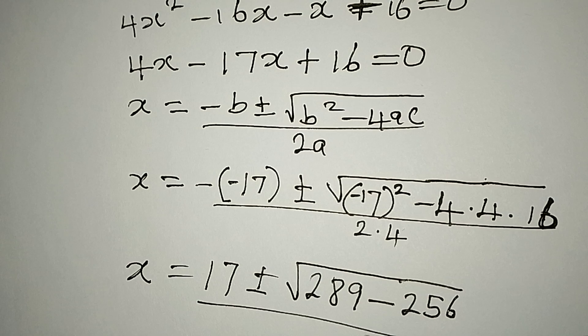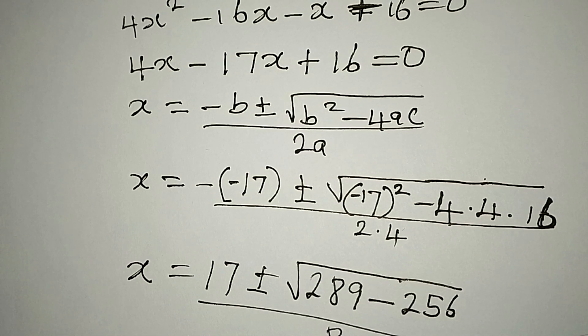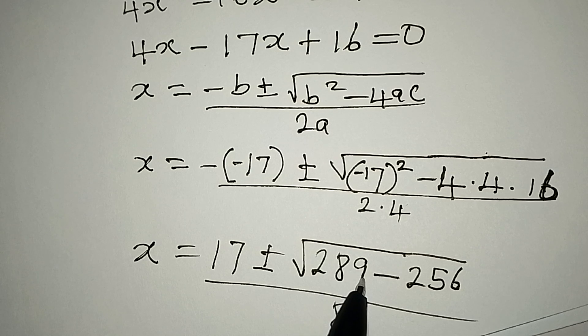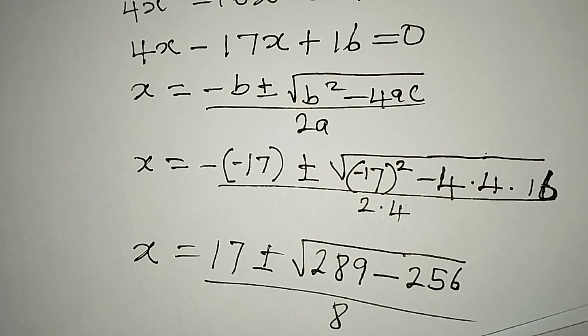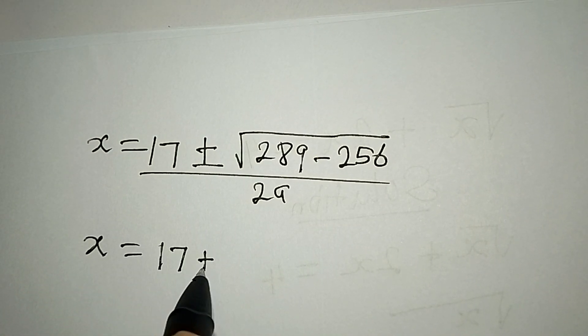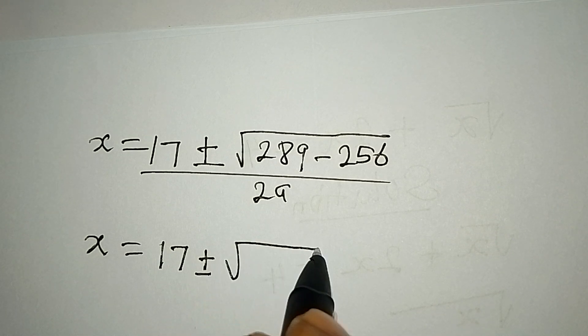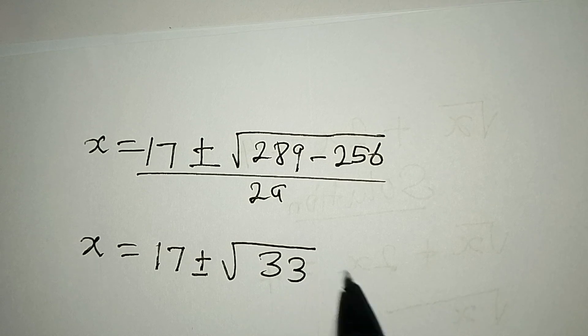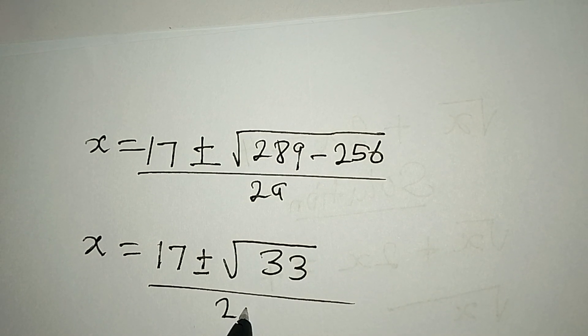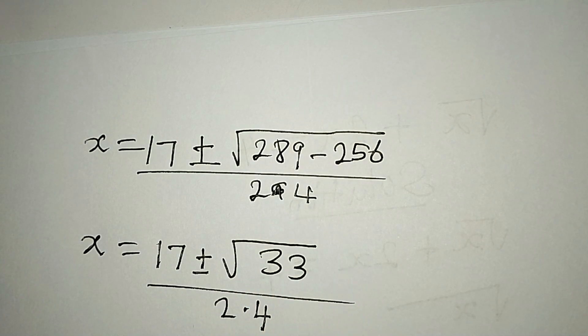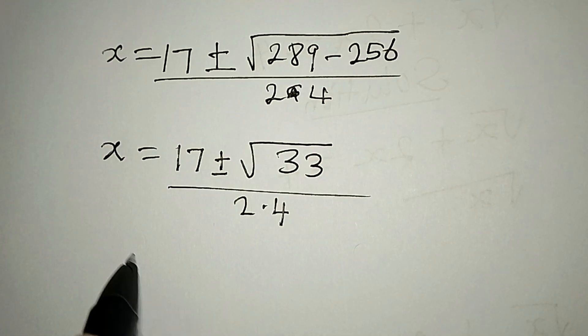And then the whole of this will be over 8. So what we'll do is subtract, 289 take 256 out of 289, which will give us 33, and that will be over 2 times 4. Remember this is 2 times 4 and that can be 8.